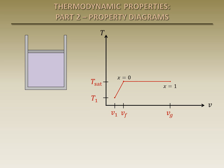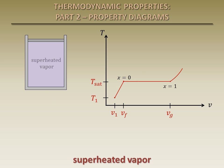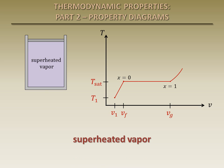As more energy is added, the vapor continues to expand and the temperature begins to increase again. This state is called a superheated vapor. Remember that the pressure has remained constant throughout this phase change process.